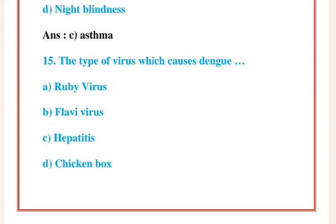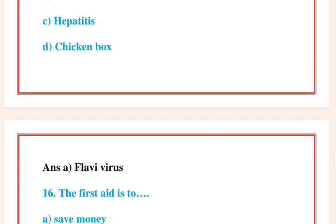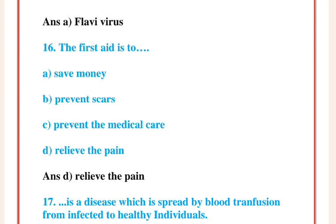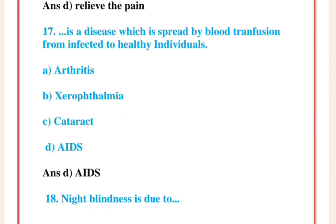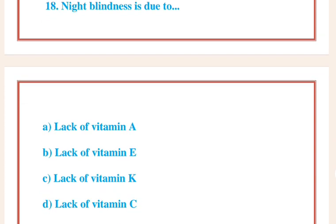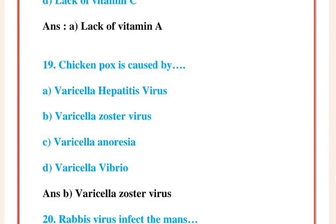Asthma. Question 15: This is a disease which is spread by blood transfusion from infected to healthy individuals Answer D: AIDS. Question 18: Night blindness is due to Answer A: Lack of Vitamin A.